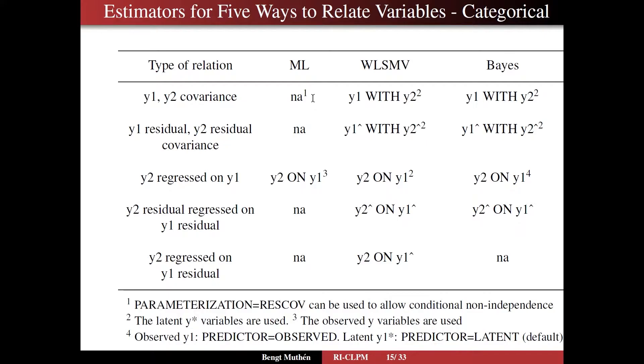Here there's no with statement, or you can use parametrization equals rescov, and that can be used to allow for conditional non-independence, say in this factor analysis situation. But for the other estimators, we have y1 with y2, for both WSMV and for Bayes.